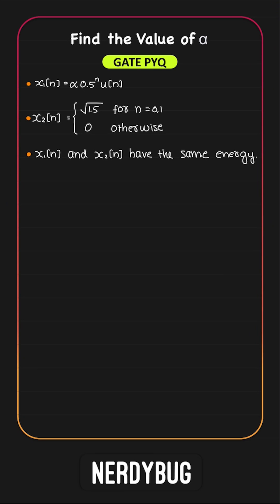Let us solve this gate pyq under 60 seconds. We have two signals x1 and x2. We have to find the value of alpha.